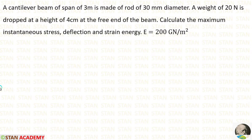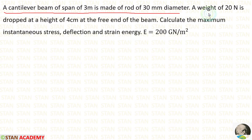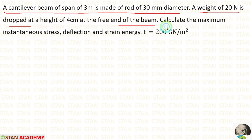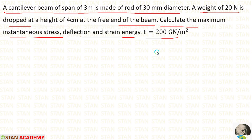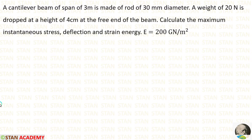Hello everyone. Today we are going to see a problem based on strain energy. A cantilever beam of span 3 meter is made of a rod of 30 mm diameter. A weight of 20 Newton is dropped at a height of 4 centimeter at the free end of the beam. We have already solved this kind of problem in a previous video, but that was a simply supported beam; now we are dealing with a cantilever beam. All the process is the same except this beam is a cantilever.